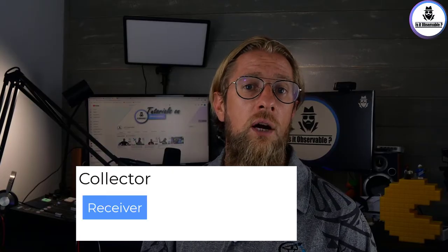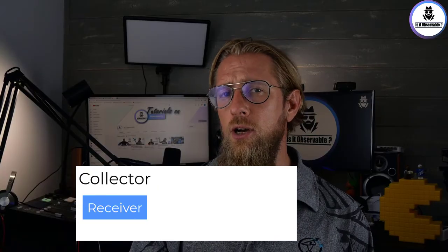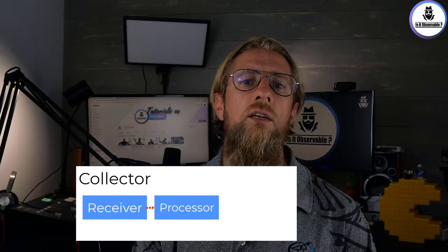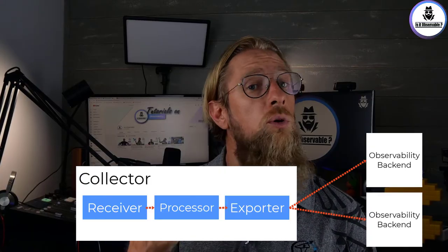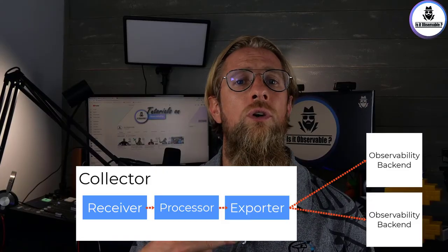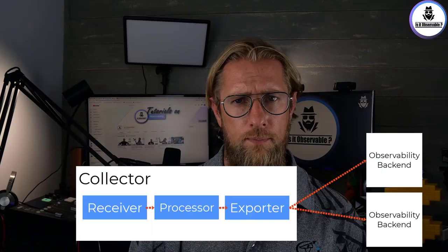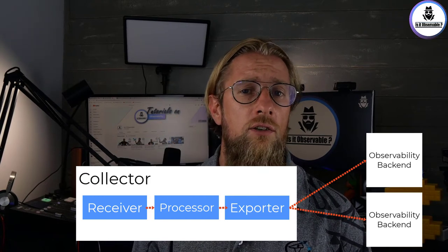Within the collector there are several components. The receiver gets data into the collector — either through push or pull. The processor allows you to transform or manipulate the received data. Then you have the exporter, which sends the processed data to one or more solutions. You can have several exporters simultaneously, similar to what we saw in the Fluent Bit episode. Everything — receiver, processor, and exporter — is defined through a collector pipeline.